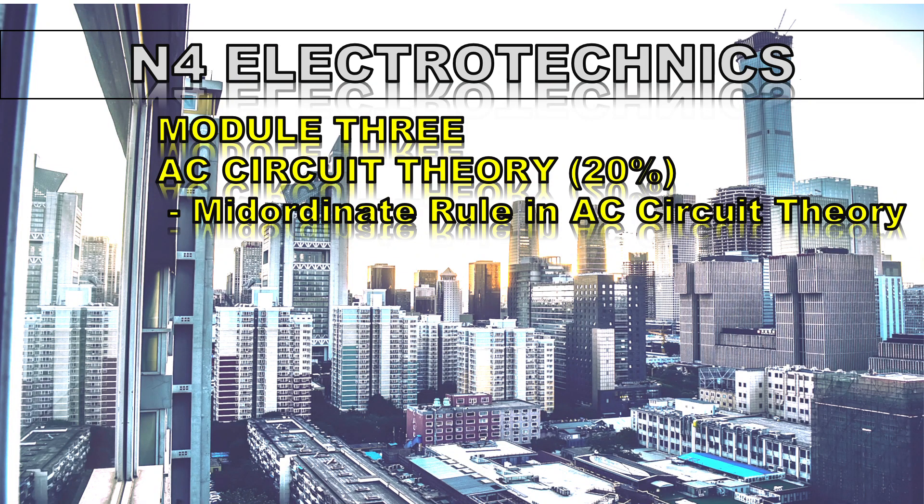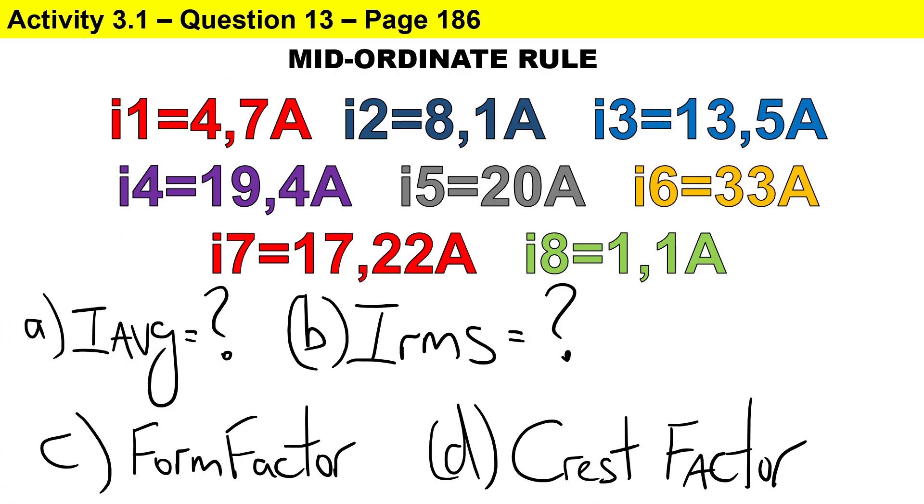In this calculation, we'll be doing the mid-ordinate rule in alternating current circuit theory. I've taken question 13 from activity 3.1 in the textbook.